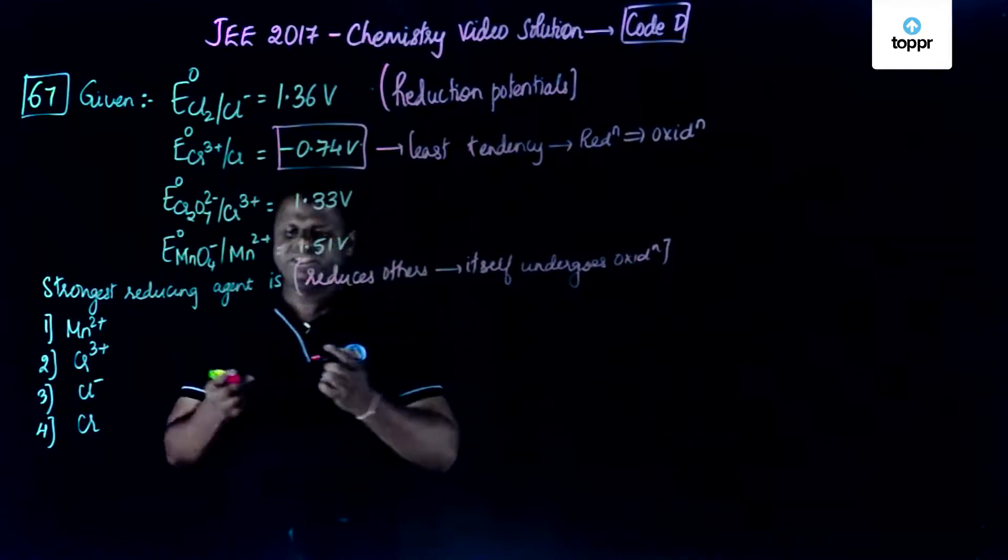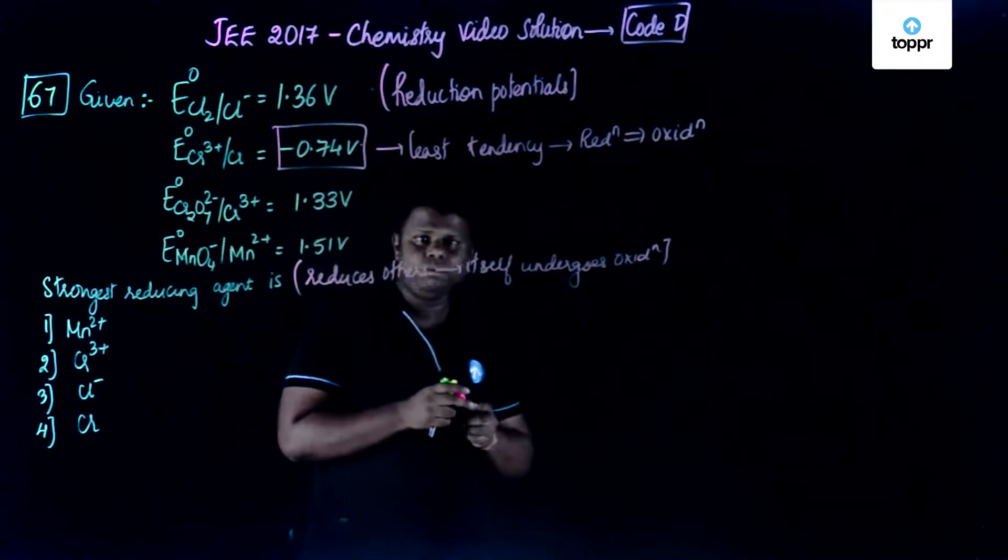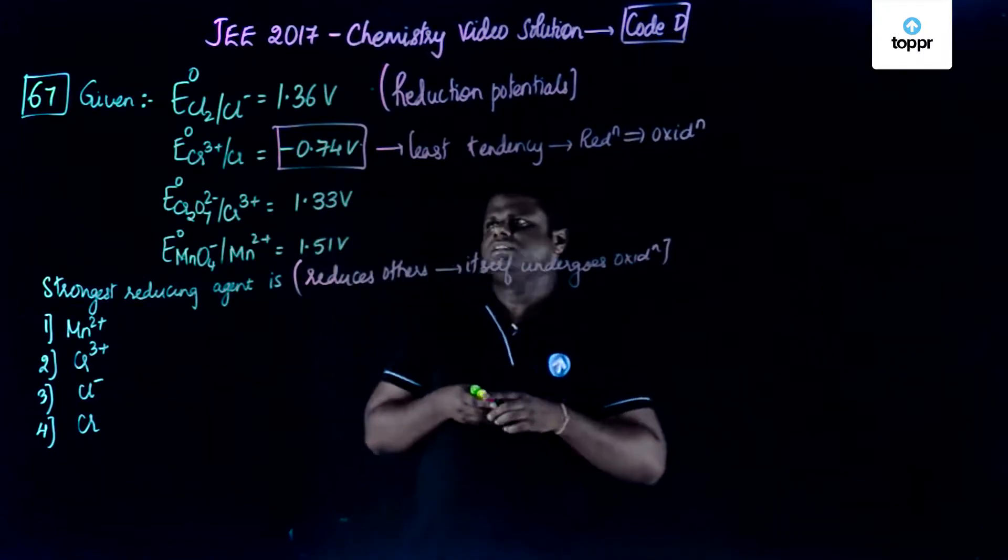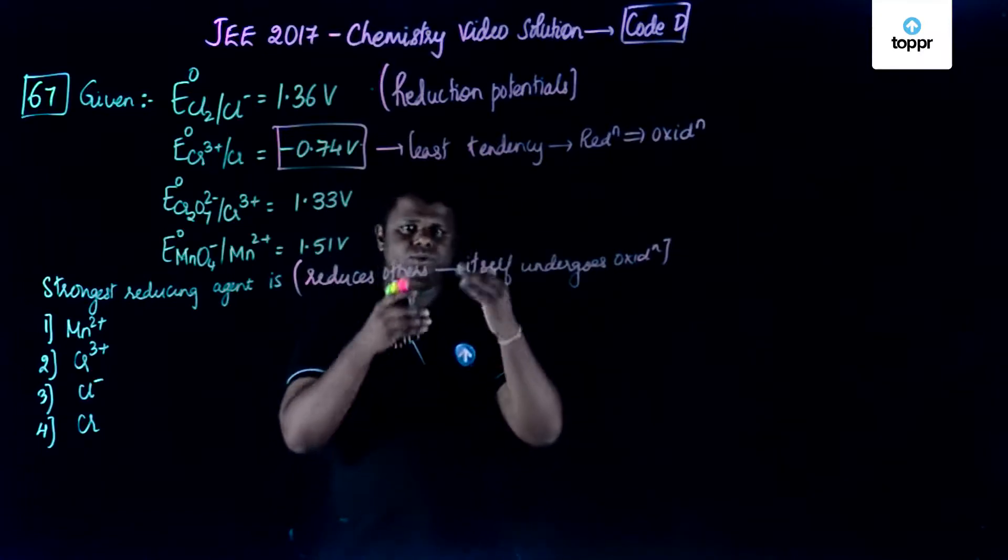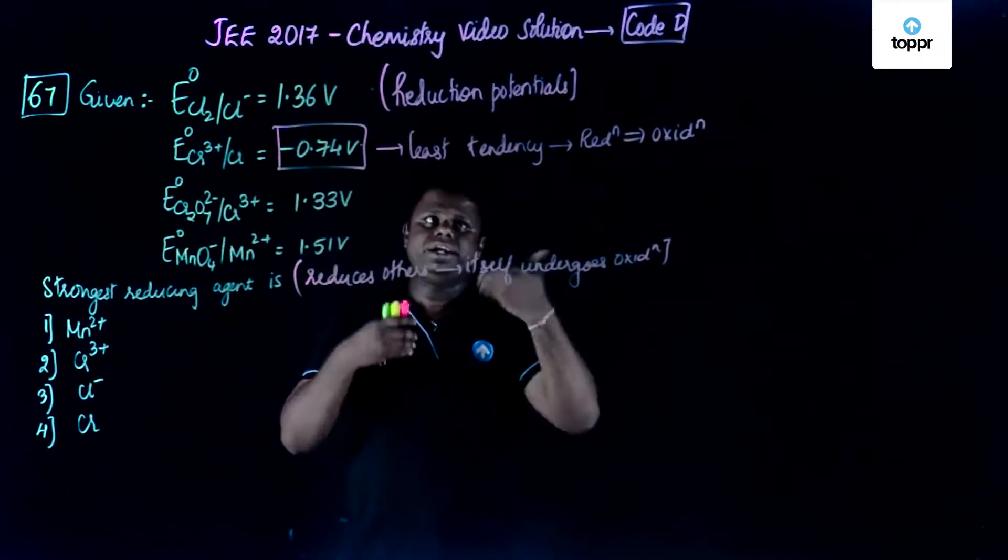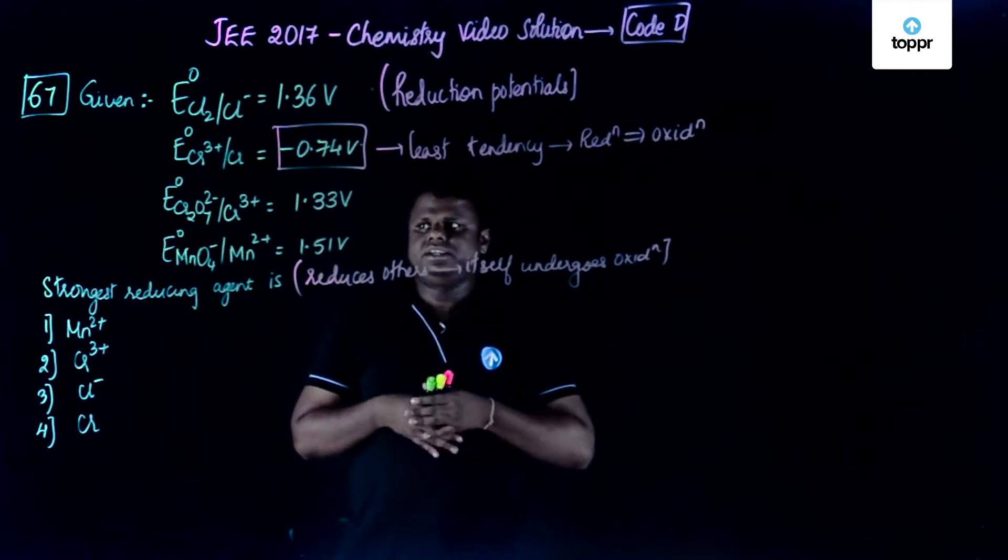So it's pretty simple to understand. Higher the reduction potential, more will be the tendency to get reduced, to undergo reduction. That's what I would say.